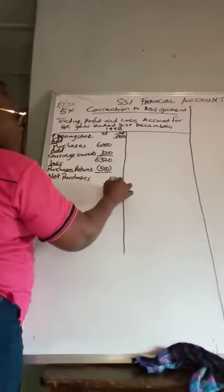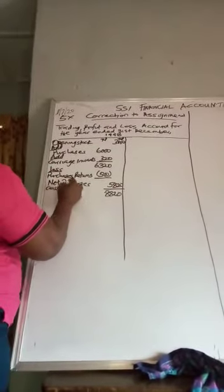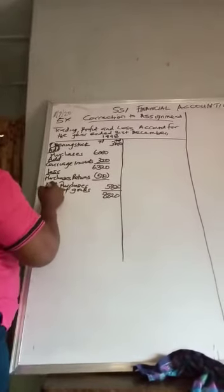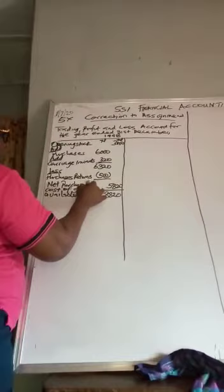To get what we call cost of goods available for sale of 8,820.